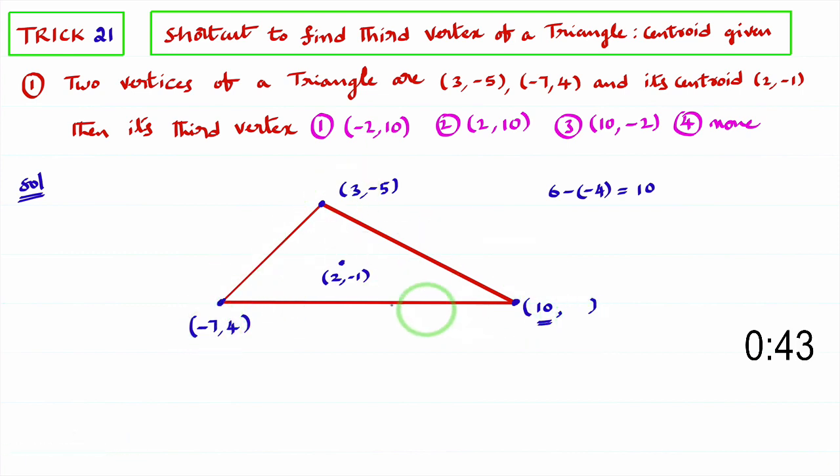Now, to find the y coordinate, you observe the centroid. This y coordinate, you multiply with 3. 3 into minus 1, that is minus 3 minus sum of y coordinates. Minus 5 plus 4, that is minus 1. So minus 3 minus of minus is plus 1. Minus 3 plus 1 is minus 2.